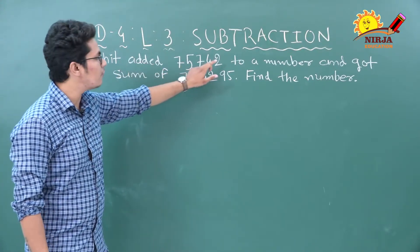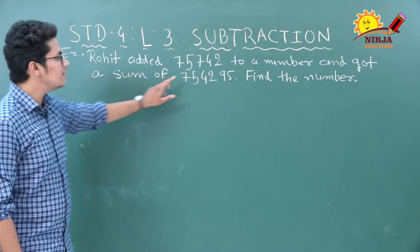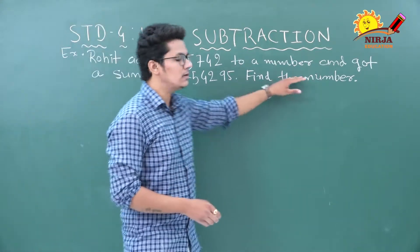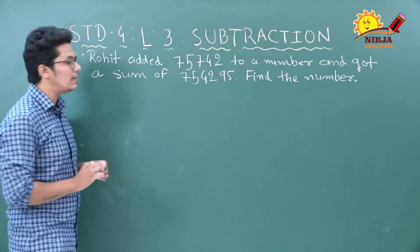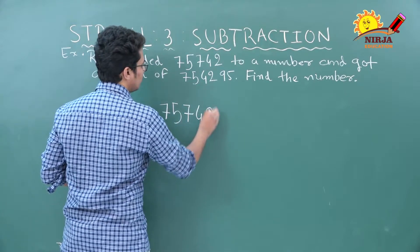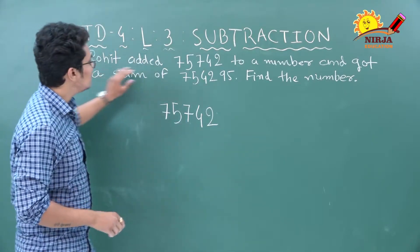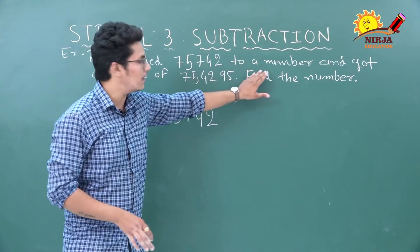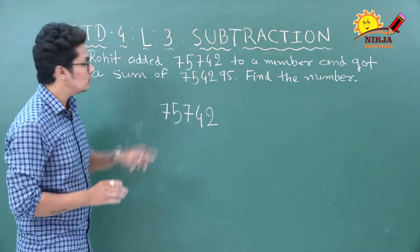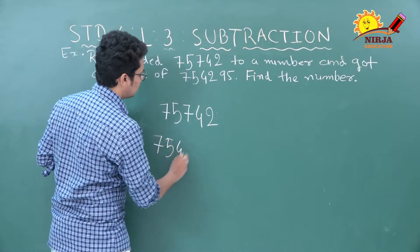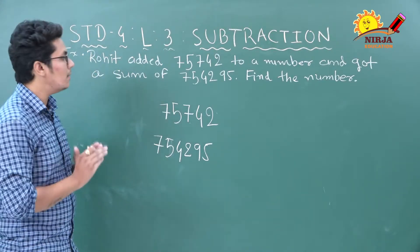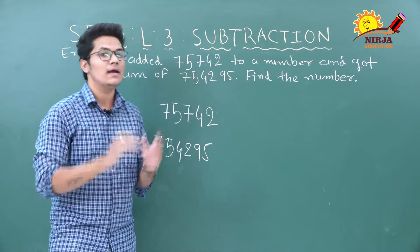Rohit added 75,742 to a number and got a sum of 7,54,295. We have to find the missing number. Writing down the information: Rohit added 75,742 to an unknown number and obtained a sum of 7,54,295. To find the missing number, we will subtract 75,742 from 7,54,295 — the difference will be the missing number.